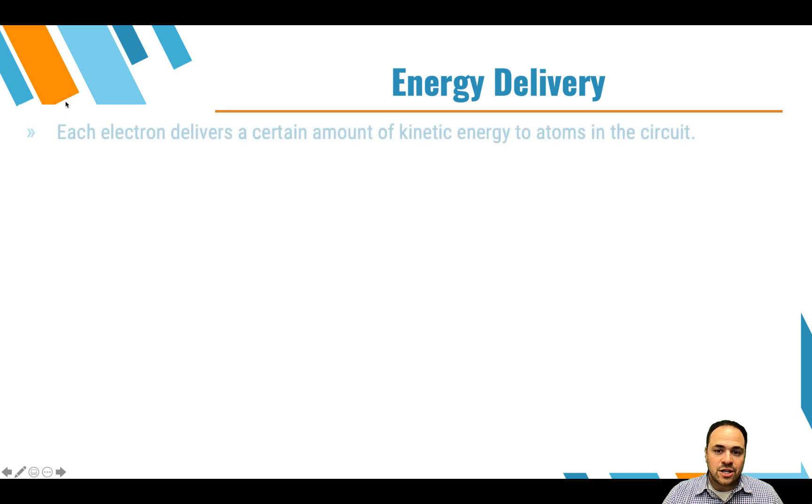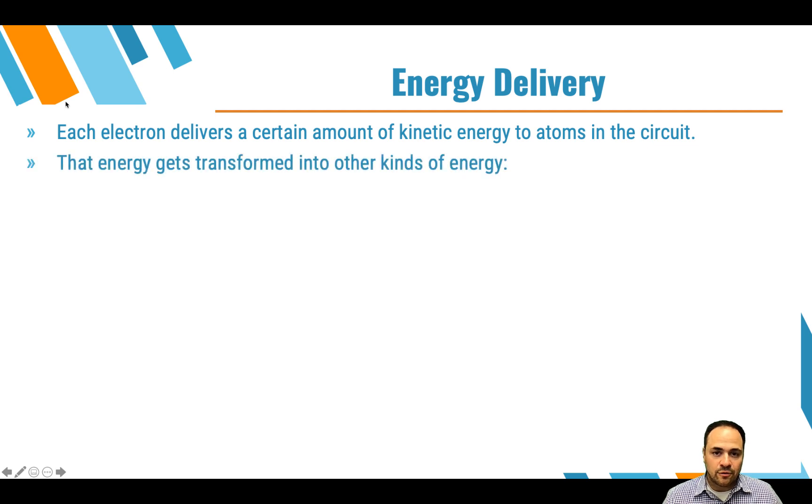Now, in terms of energy, every electron is going to deliver a certain amount of kinetic energy to atoms in the circuit. The electrons are flowing through the circuit. They are going to bounce into atoms and other things, and they're delivering energy through those interactions. That energy gets transformed into other types of energy, like thermal energy, light energy, sound energy, other types of energy that we experience when using our different devices and different machines.